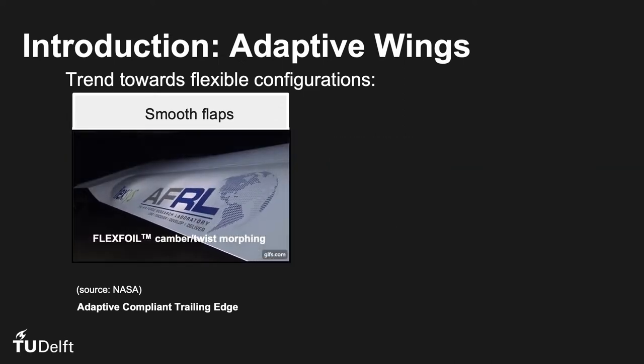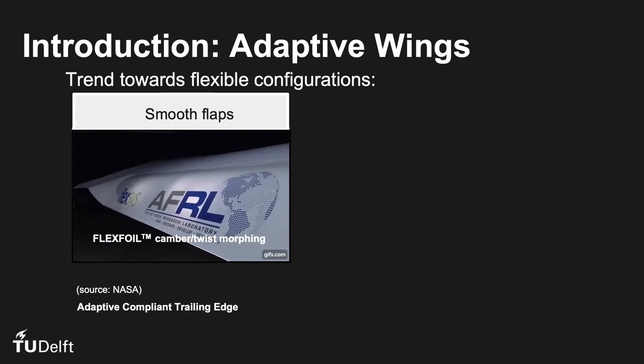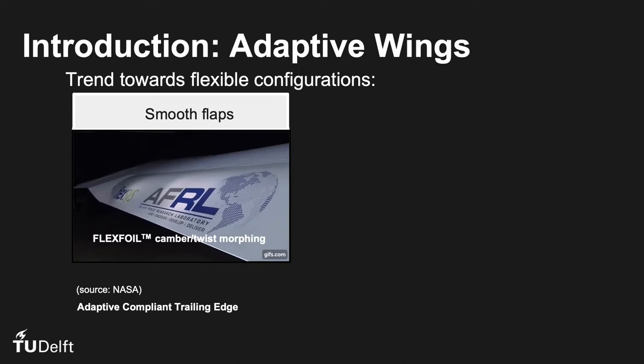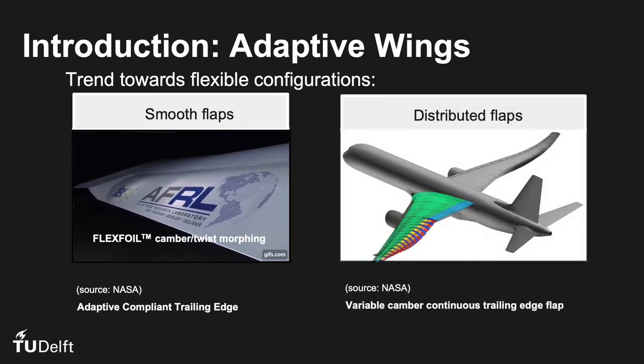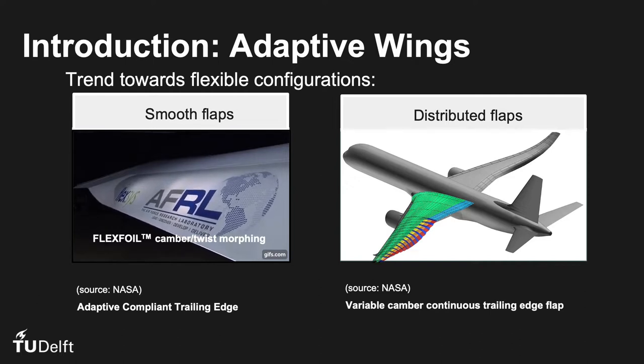On the left, an example of an adaptive compliant trailing edge concept developed by Flexis and tested by NASA in flight. The right is a distributed continuously morphing concept proposed by NASA, the VCTF concept.